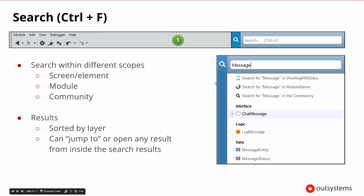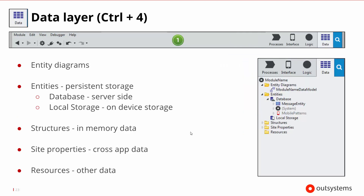Starting on the far right, we can search, and if we type in something to search for, it will bring back different types of things that match the search — whether they're in the data area, the logic area, or the interface area. We can narrow our search: we can search just within the area we're working, within the module, or across our whole community including the Forge and other resources. If you double-click on any of the results, it will jump to them and open them so you can see what you were searching for.